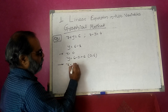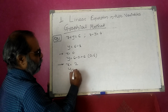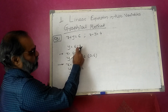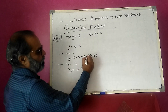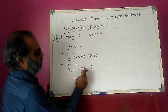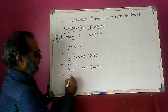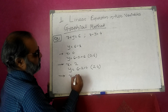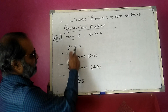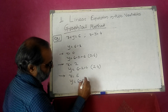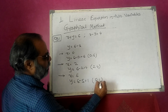Now I take x is equal to 2. The value of y becomes y is equal to 6 minus 2, which equals 4. My point becomes (2, 4). I take another value, x is equal to 5, so y becomes 6 minus 5, that is 1. The coordinate becomes (5, 1). So these are three coordinates.